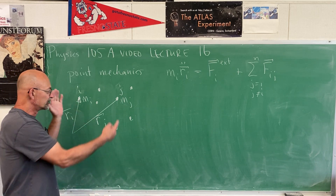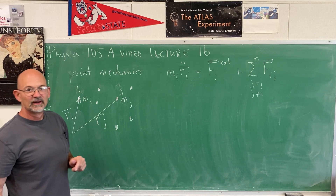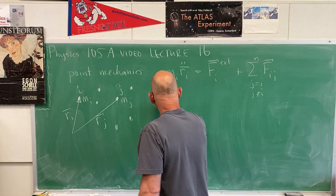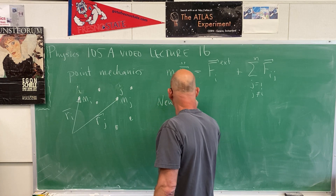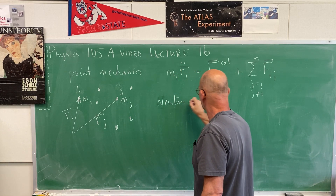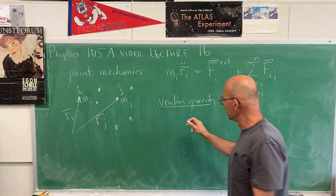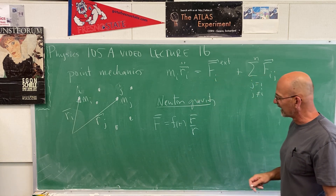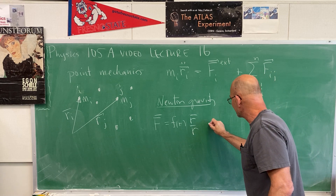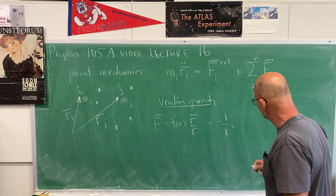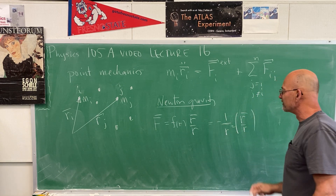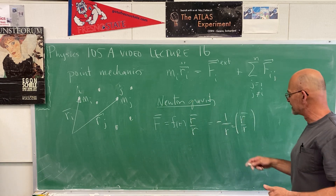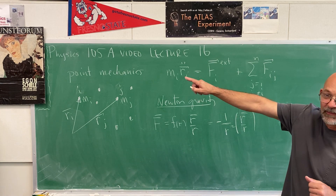We're going to review this using Newtonian gravity, since we've studied two bodies and are now generalizing. For a central force, we had F = f(r) * r-hat, which was minus one over r-squared times the unit vector — an attractive force. The unit vector points from the origin to the particle, and the minus sign makes it attractive.